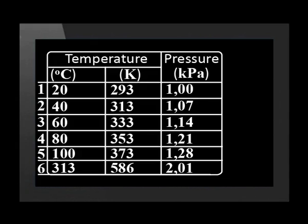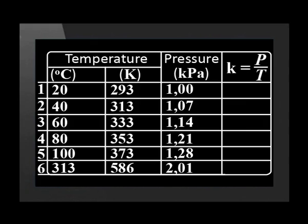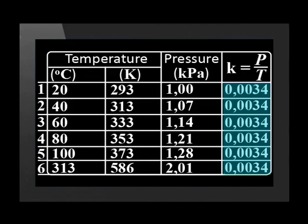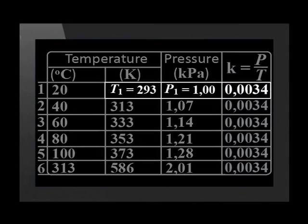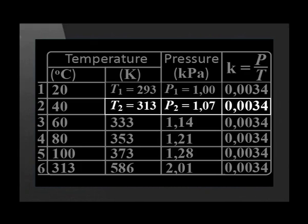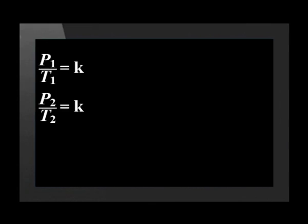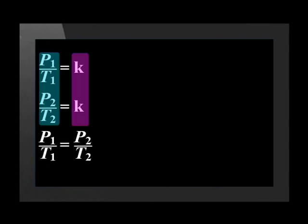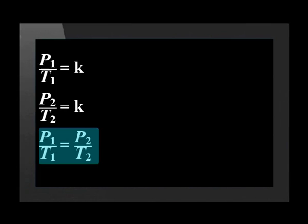Let's use some ideal data which has no experimental error in it, so that we can see patterns in the data more easily. Here is all our ideal data. It would be nice to solve these questions with an equation, so let's look at the pattern in the data. We ignore the data for degrees Celsius temperature and calculate pressure divided by temperature for each line — we find a constant. We can call this constant K. So P1 over T1 equals K, and P2 over T2 also equals K. Since both equal the same constant, P1 over T1 equals P2 over T2.